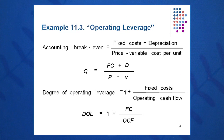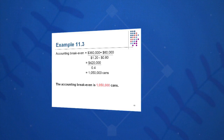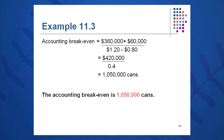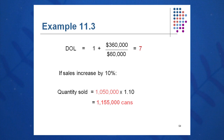The breakeven quantity on an accounting basis is fixed cost plus depreciation over contribution margin. And DOL is one plus fixed cost over OCF. The accounting breakeven quantity in units — in this case, cans — is fixed cost of $360,000 plus OCF of $60,000, divided by the contribution margin of 40 cents, giving us an accounting breakeven quantity of 1,050,000 cans. The degree of operating leverage is one plus $360,000 over $60,000, which comes out to a DOL of seven.